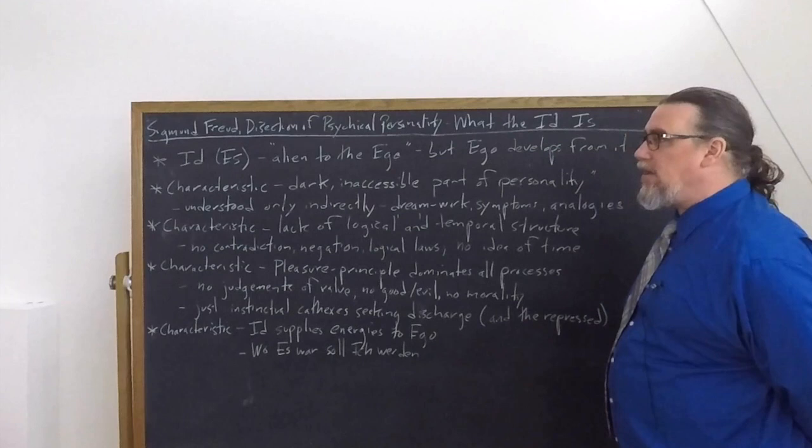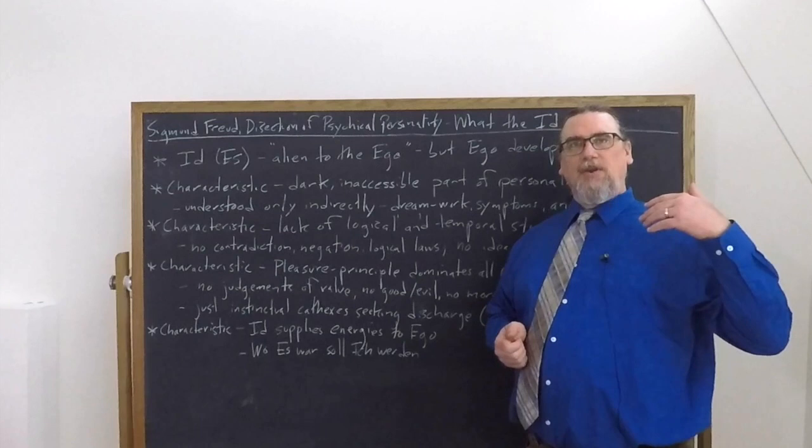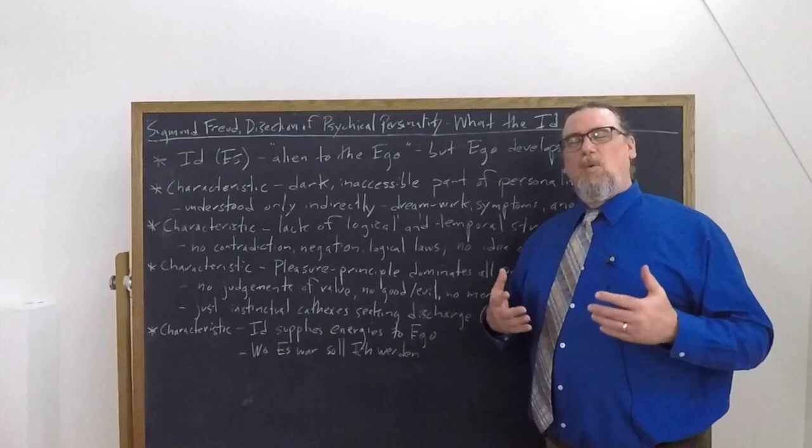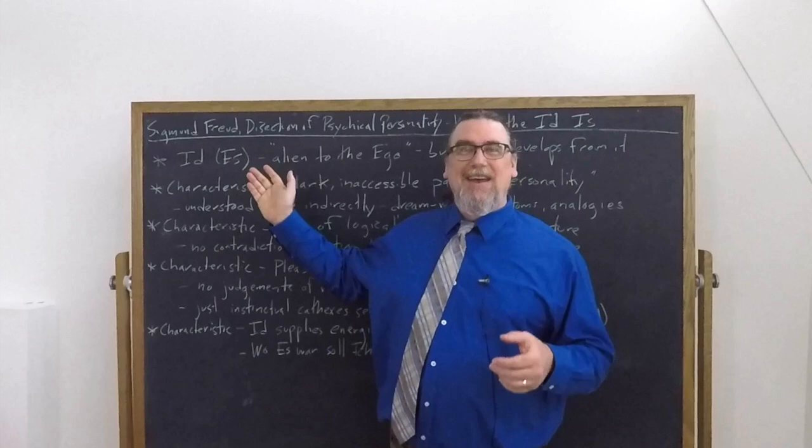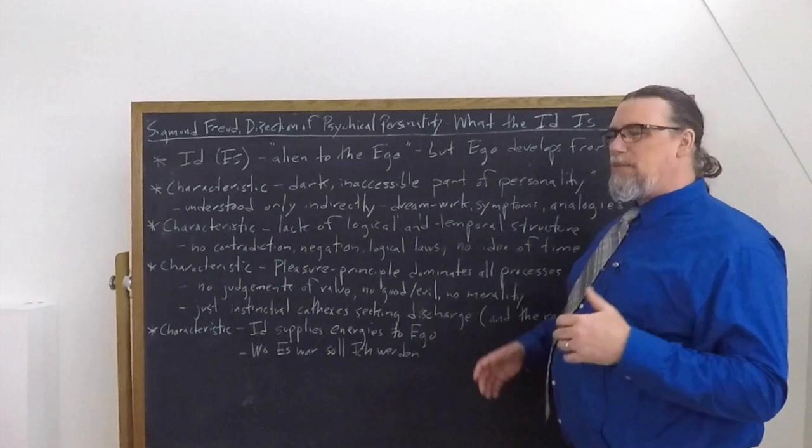So he begins by reiterating, this is not something absolutely new in Freud's work, but that we can call this the id or in German, the Es. It is a little bit more removed for us English speakers from what we would normally talk about. It really could be just translated as the it, the id is a Latin form. Freud is also using ego, ego is I, right? So he tells us that it's a part of the personality alien to the ego.